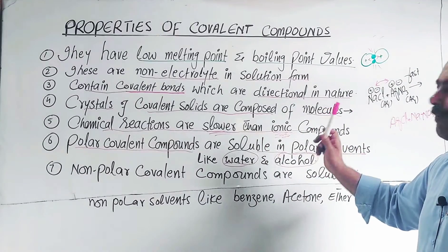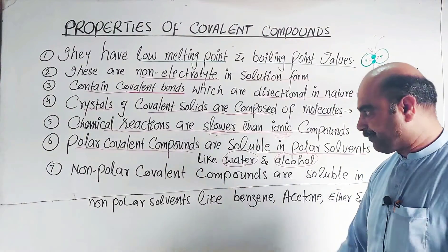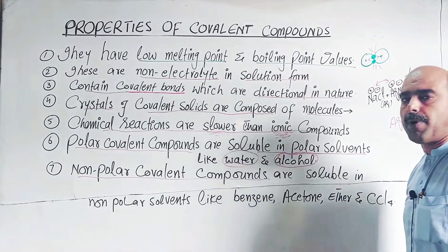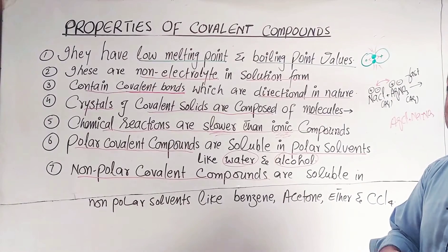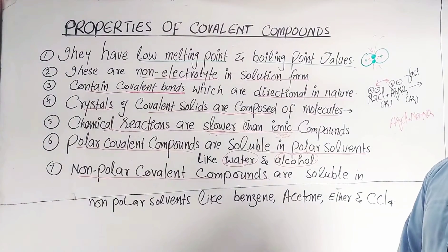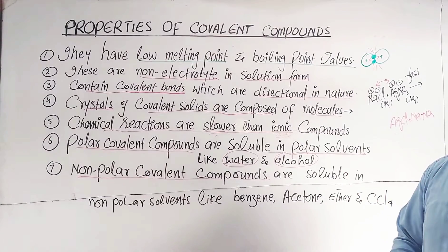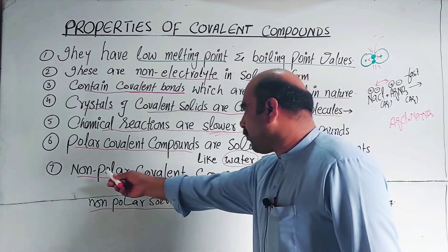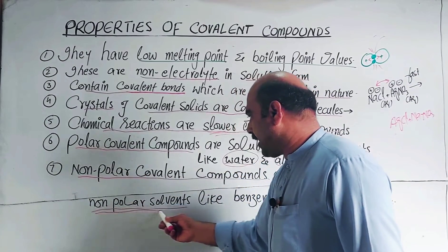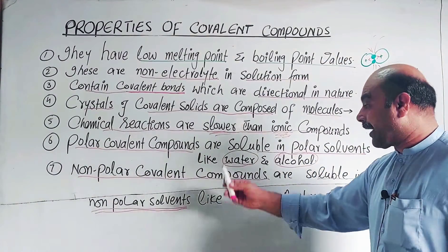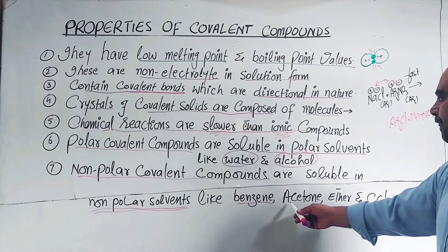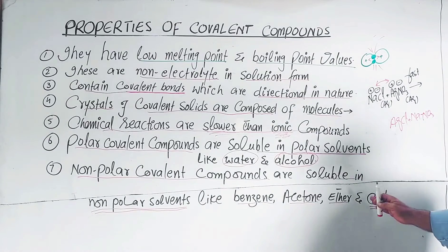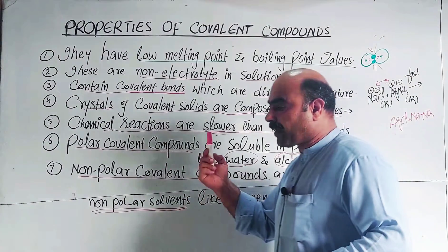Polar covalent compounds dissolve in polar solvents — examples of polar solvents include water and alcohols. Non-polar covalent compounds, which have no polarity because they are formed by sharing between similar atoms, are soluble in non-polar solvents, following the like dissolves like rule. Non-polar solvent examples include benzene, acetone, ethers, and carbon tetrachloride.